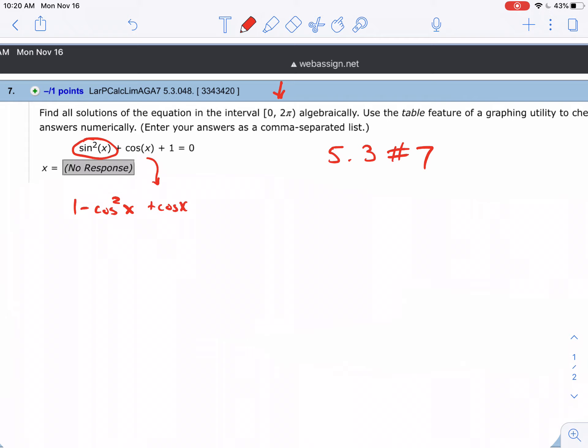So now I have negative cosine squared of x, positive cosine of x, and then I have two positive ones.